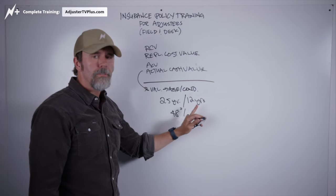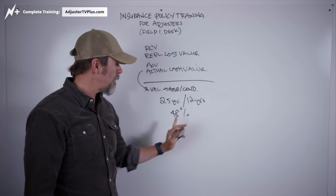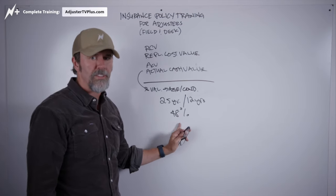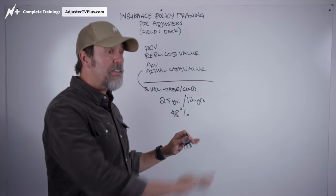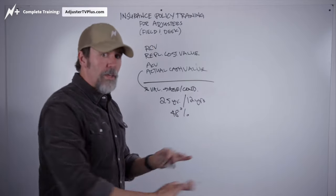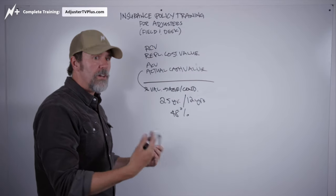But then once you show us paperwork from the contractor saying that the work was completed, then we'll send you the other 52%, the other 50%, whatever it is. And then you pay the contractor and then you're all done. The only thing is you come out of your pocket. Like I said, is your deductible.